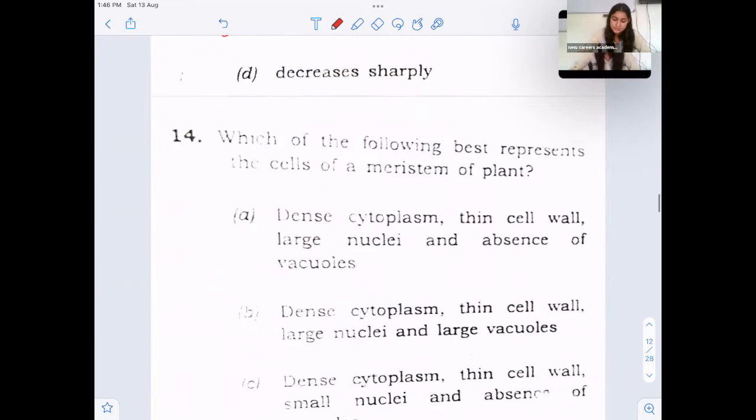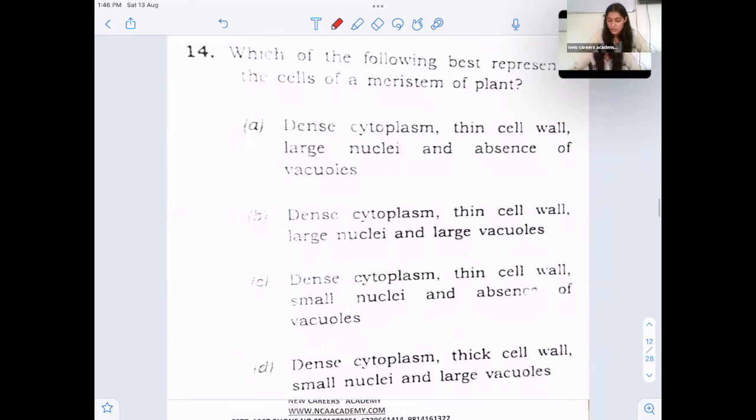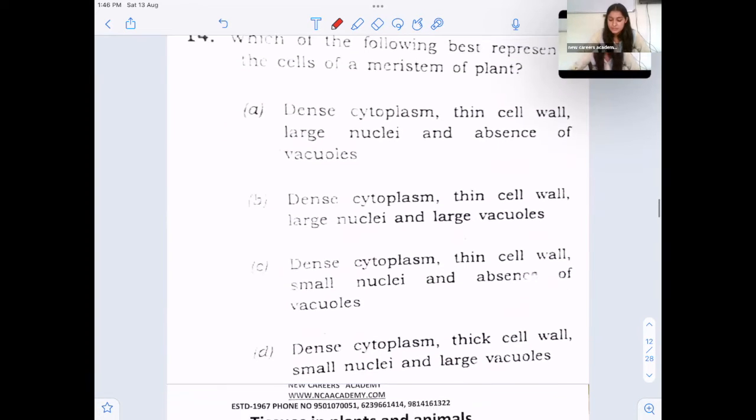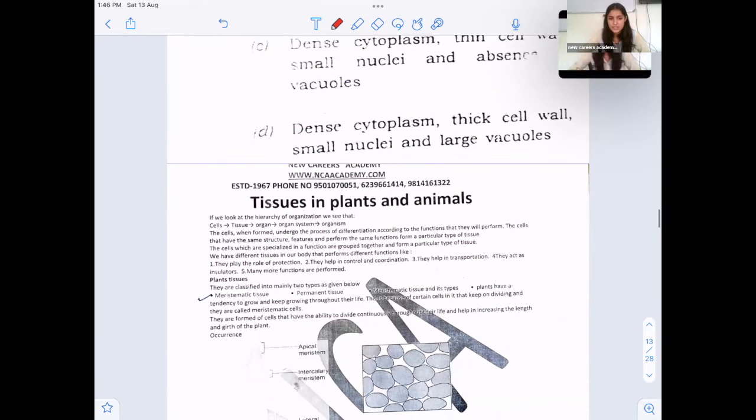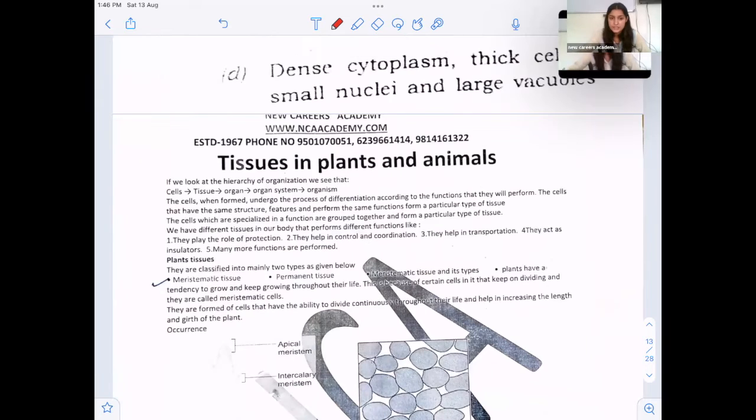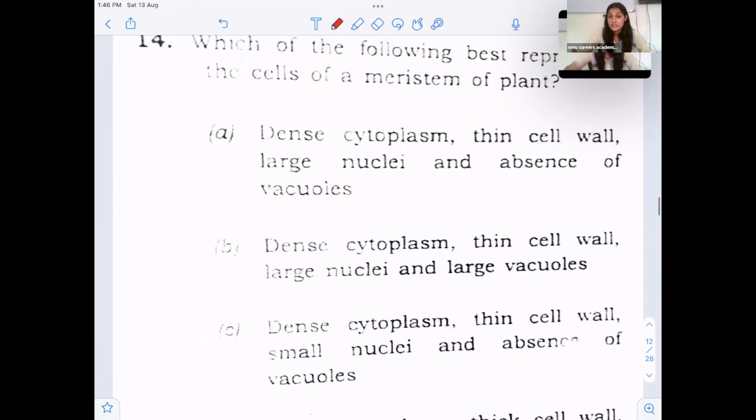Next, which of the following best represent the cell of a meristem of plant? Meristem tissues are those, meristematic cells are those which continue to divide in plants and they are responsible for growth in plants. So these are the cells which have dense cytoplasm, they contain cell wall, they are thin walled and large nuclei and there are very few or no vacuoles. So option A is correct.